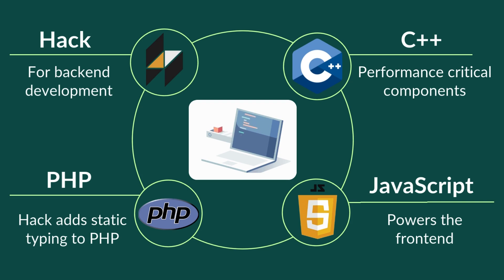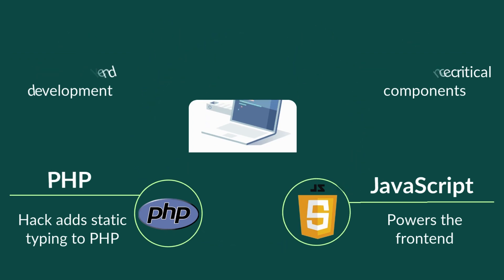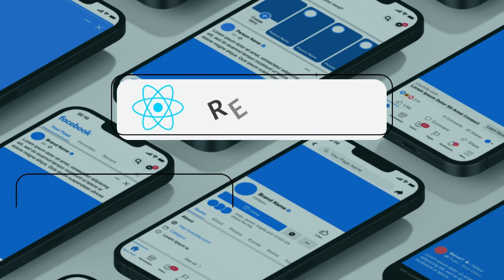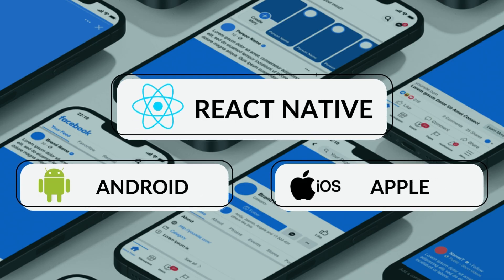JavaScript powers the front-end, delivering dynamic web applications that engage millions of users every day — making it the perfect combo for a seamless user experience. For mobile, Facebook utilizes React Native, a framework that allows them to build applications for both iOS and Android using a single codebase.